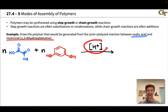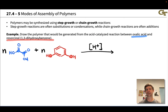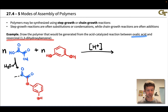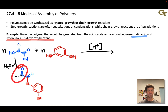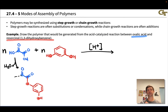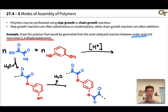Under the acid-catalyzed conditions in particular, we expect a Fischer esterification between the hydroxyl groups of resorcinol and the carboxylic acid groups of oxalic acid. Initially, we can think about making an ester where on one end we might have a free carboxylic acid group, and on the other end a free hydroxyl group. Polymerization can continue off of these two ends — another resorcinol molecule comes in on one side, and another oxalic acid molecule on the other, and the chain grows from there.